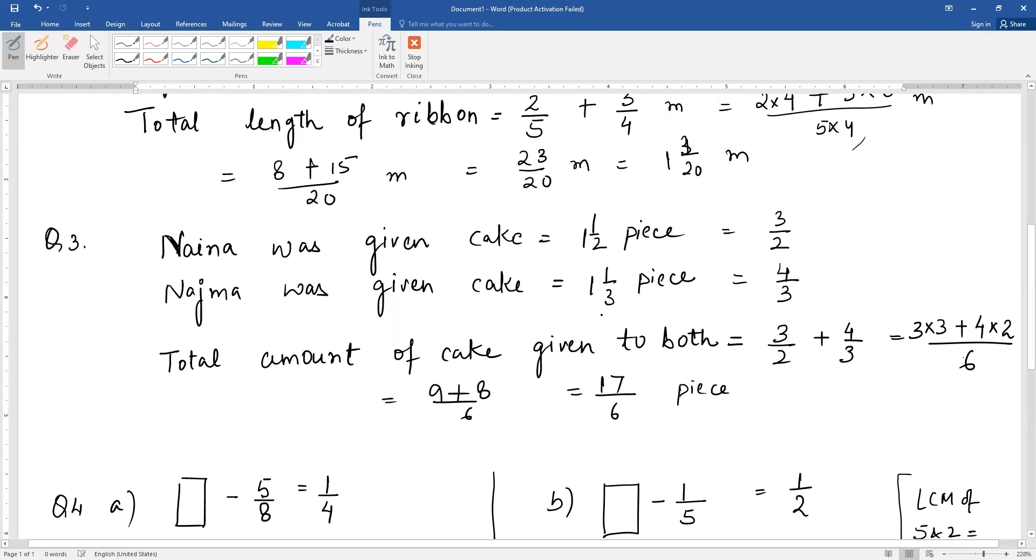We need to convert this to a mixed fraction. 17 divided by 6 gives 2 with remainder 5, so that is 2 and 5 by 6 pieces of cake.